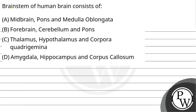Hello students, let's see the question. The brainstem of the human brain consists of: Option A, midbrain, pons and medulla oblongata; Option B, forebrain, cerebellum and pons; Option C, thalamus, hypothalamus and corpora quadrigemina; and Option D, amygdala, hippocampus and corpus callosum.